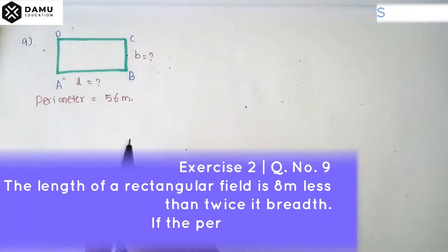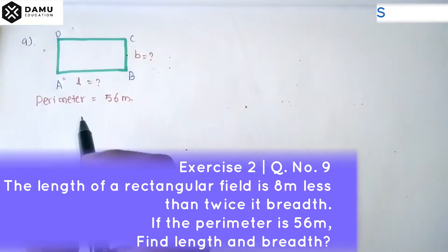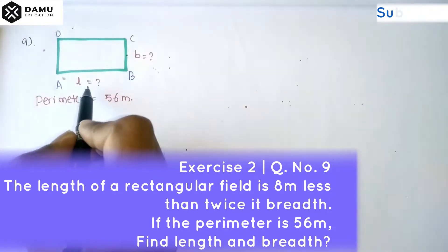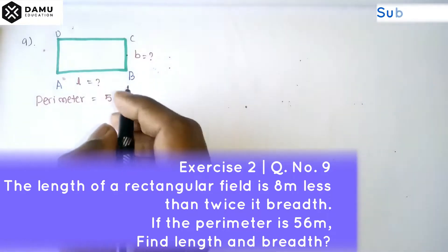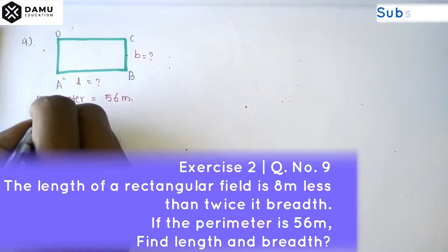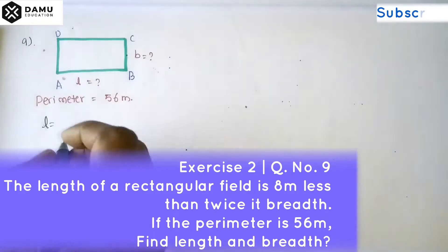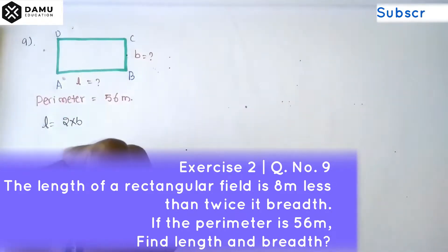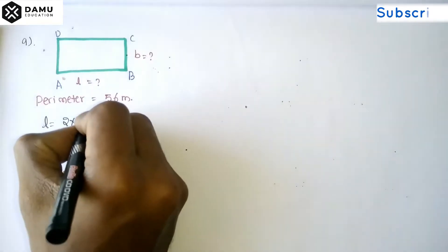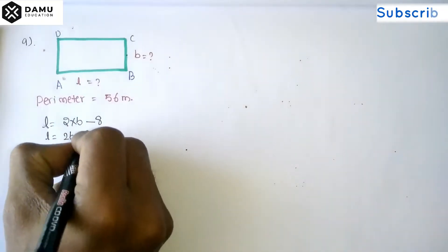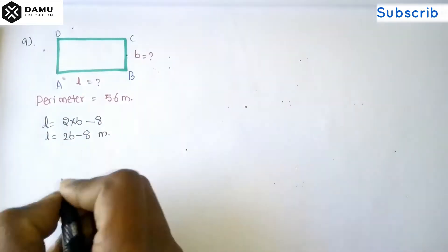Hello viewers, in this module we are going to discuss the solution for the ninth question. The question is: the length of a rectangle field is 8 meters less than twice its breadth. So length will be twice the breadth minus 8 meters, that is L = 2b - 8 meters.